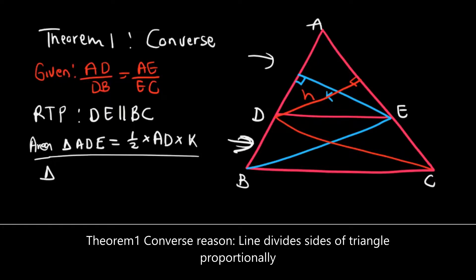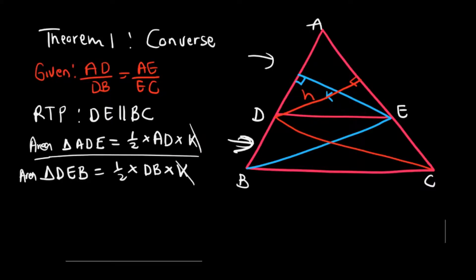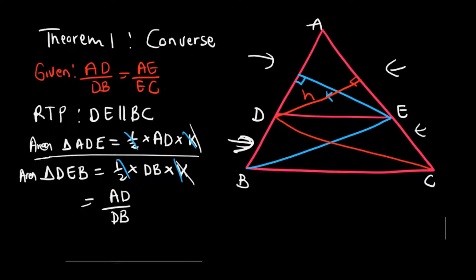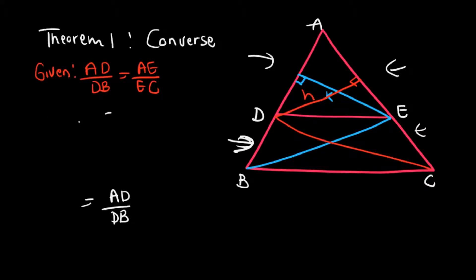The area of triangle DEB equals one-half times base DB times height K. Dividing area of triangle ADE by area of triangle DEB, the one-half and height K cancel, leaving us with AD over DB.